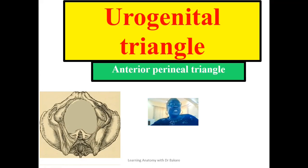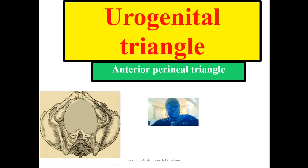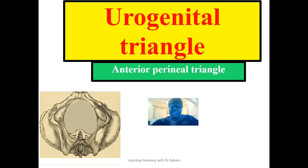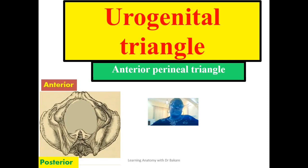In this lecture we'll be looking at the urogenital triangle, which can also be referred to as the anterior perineal triangle. Looking at this image, this is the perineal region. I have put up a lecture on the perineum — if you have not checked that lecture, please kindly go and do so. This is the inferior view of the pelvic cavity, and it is in this specific region that we have the perineum. The perineum is placed here in anatomical position, with the anterior view at the front and the posterior view behind.